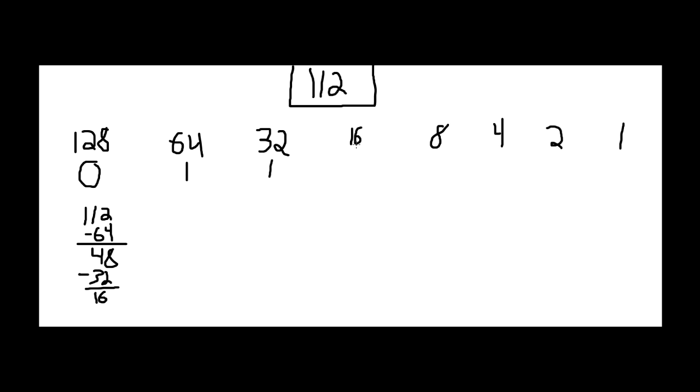Then you're going to subtract 32 from 48, which gets 16. And then you're going to check back up here to your next number. 16 is the next number, so that's equal to it, which is a 1. And then you're going to subtract 16 again. If you put a 1 up here, you subtract it from this number.